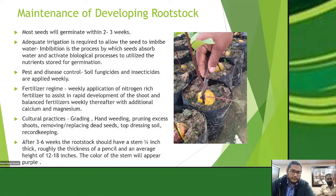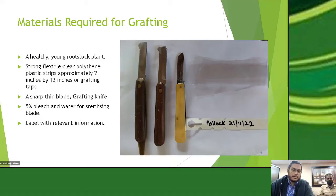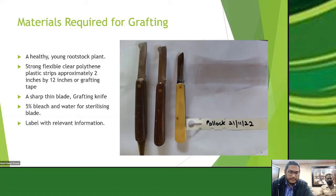To perform the actual graft, the materials required are: the young rootstock plant, some strong flexible clear polythene plastic strips cut to about 2 inches by 12 inches — or grafting tape of that size — a thin sharp blade with a comfortable handle, something to sterilize the blade such as a 5% bleach and water solution, and a label on which you record the variety grafted, the date, and any other important information such as the person who grafted.